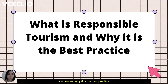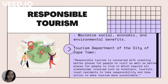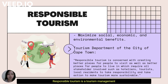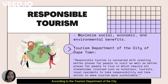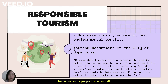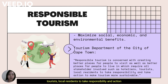Now let me tell you what responsible tourism is and why it is the best practice. Responsible tourism is a tourism management approach which aims to maximize social, economic, and environmental benefits while minimizing negative impact on a destination. Responsible tourism is concerned with creating better places for people to visit as well as better places for people to live in, which requires all stakeholders involved — such as hotels, tourists, and local residents — to take responsibility and take action to make tourism more sustainable.